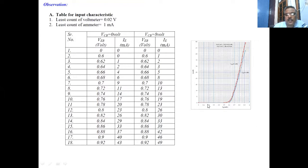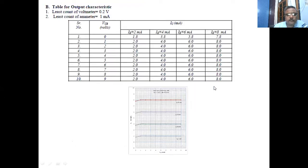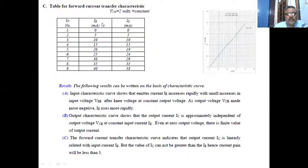When we plot a graph of these readings, we get this kind of a curve. For the output characteristics, we keep the emitter current constant — that is, the input side current is kept constant — and we vary the output voltage, that is the collector-base voltage.